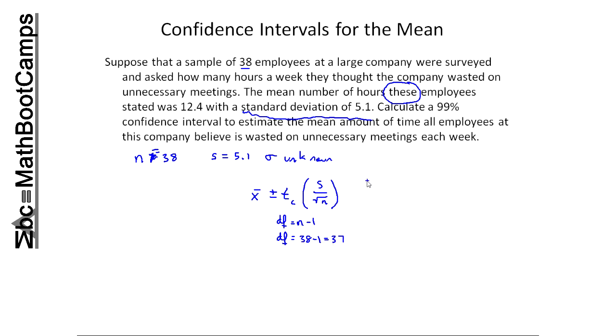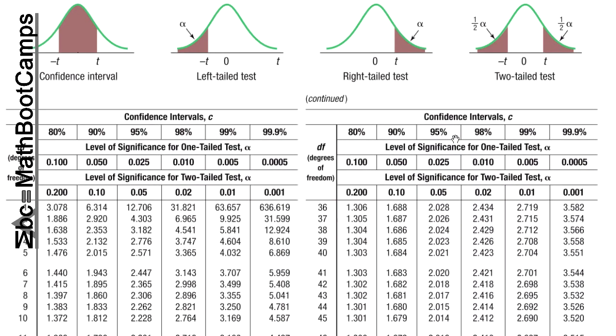I'm going to look on the table now. What I'm looking for is degrees of freedom 37 and a confidence level of 99%. And so many tables are situated slightly differently. Some may actually skip values and stop at 30 and start skipping, so you'll use the closest one if you're in that situation. But this particular table does have 37 in it, and I see that tc would equal 2.715.